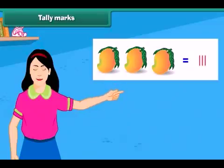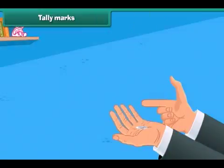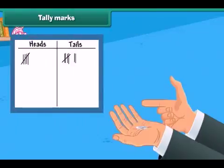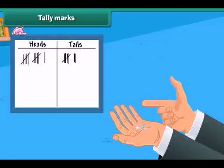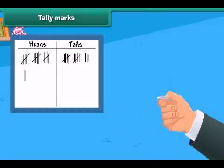Let's do an activity to prepare a tally chart. Flip the coin and see what side of the coin appears — is it heads or tails? Mark it in the table as shown. Continue to flip the coin for 25 times and for each time mark the reading in a table. Counting the marks one by one takes more time, but by using tally marks we can skip the count by 5s. It is quick to record data while using tally marks.